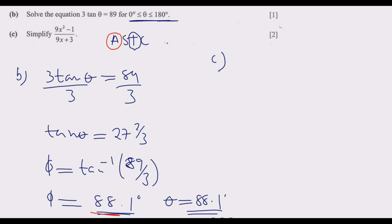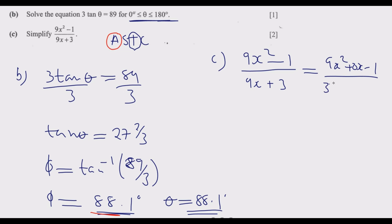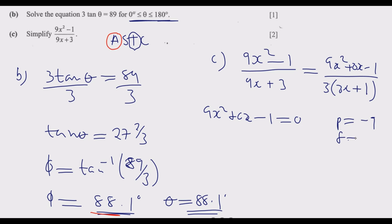For part (c), simplify (9x² - 1) / (9x + 3). Rewrite as (9x² + 0x - 1) / (3(3x + 1)). To factorize the numerator 9x² - 1: the product is 9 × (-1) = -9, and the factors are +3 and -3, which sum to 0. This is a perfect square difference. Substitute to split the middle term: 9x² + 3x - 3x - 1.